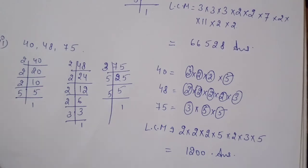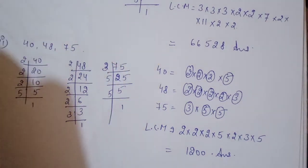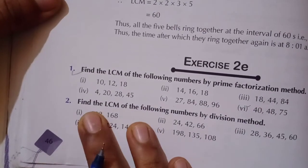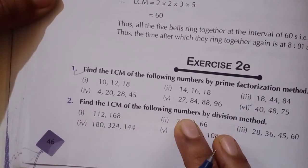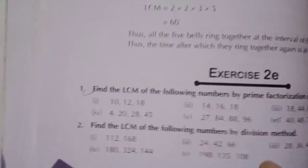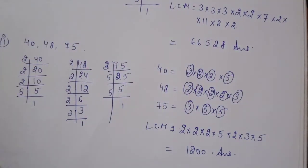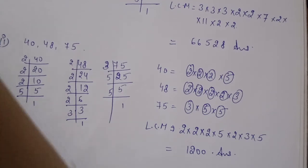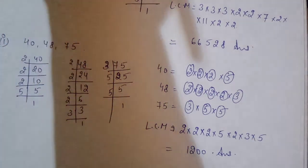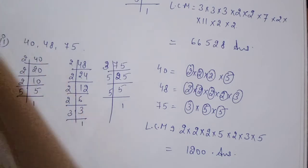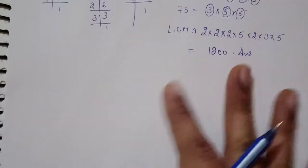This is all about Question 1 of Exercise 2E — it is completed. Now the next question asks us to find the LCM of the following numbers by using the division method. Now we will follow the division method. Let's see how we use it to solve the question.